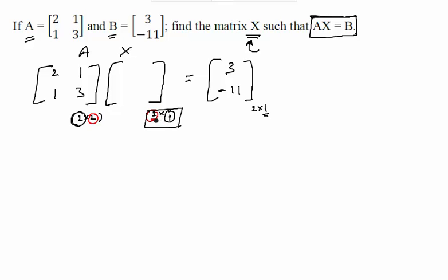Now since we have concluded that the matrix is of the order 2×1 we can now assume that the two elements are A and B. So this is our matrix and now if we get the values of A and B we will get our matrix X.